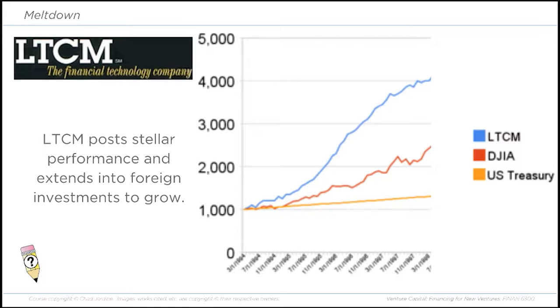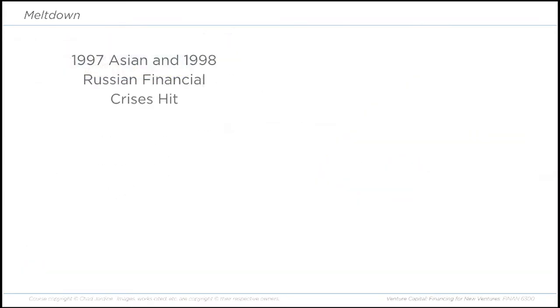LTCM used all these sophisticated models and formulas from some of the best minds on the planet, as well as relationships with Merrill Lynch and Bear Stearns, and they were killing it. They were focused on a specific type of fixed income security and the arbitrage between these and treasuries. Because they were doing so well, more and more people wanted to invest with them. But they were running out of the fixed income type deals that were their bread and butter, causing problems deploying all the capital they were raising. So they went looking in other places and expanded into international versions of the deals they were running domestically. Unfortunately, just as Merton and Scholes were being awarded their Nobel Prize, the Asian financial crisis hit in 1997, followed by the Russian financial crisis in 1998. As a result, LTCM was caught off guard by the turbulence in these international markets and got sucker-punched.